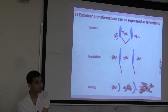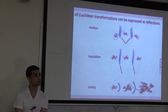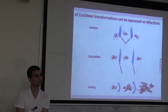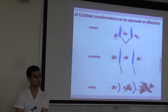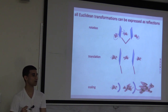Any even number of reflections corresponds to some rotation. You can always break any rotation down into two reflections. You can always find a canonical decomposition that suggests itself directly from the algebra.